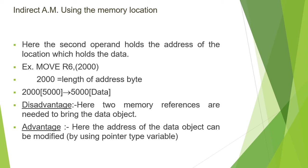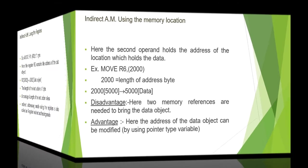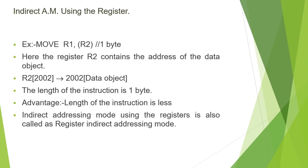This is the drawback of indirect addressing mode: two or more memory references are needed to bring the data object. The advantage is that the address of the data object can be modified — if we want to modify the address of the data object, it is possible through the pointer value, whereas in direct addressing mode it is not possible.